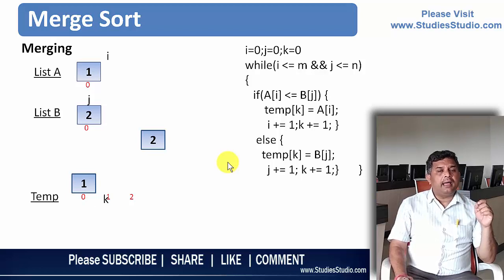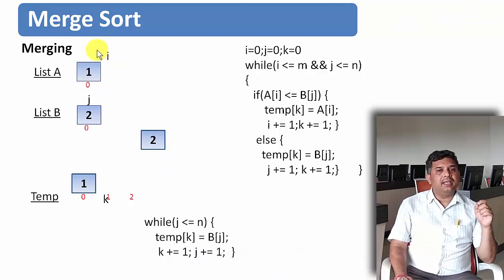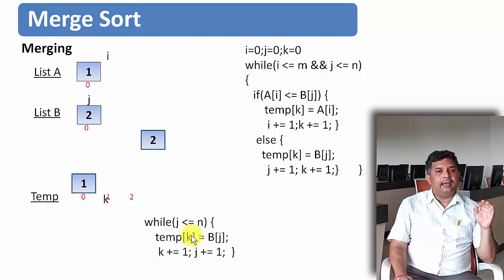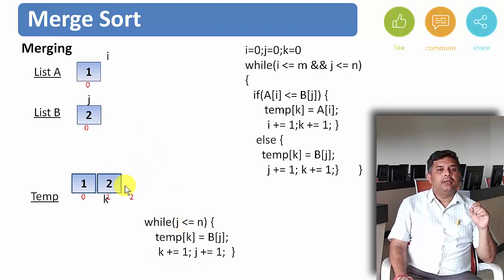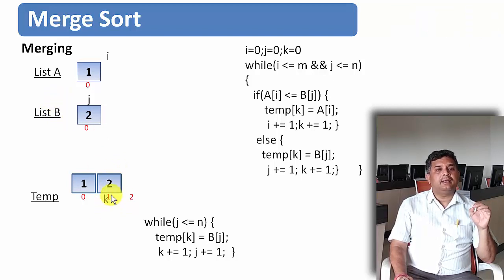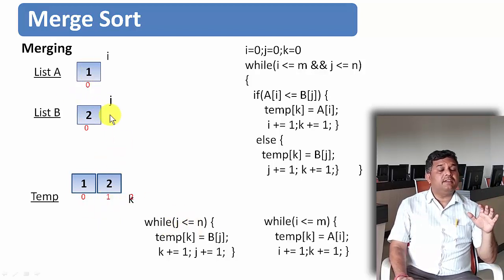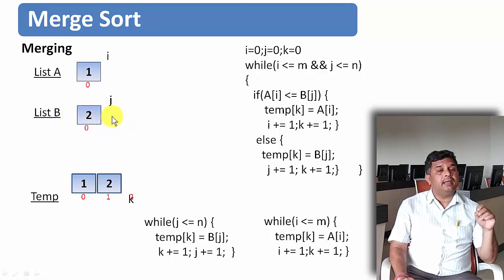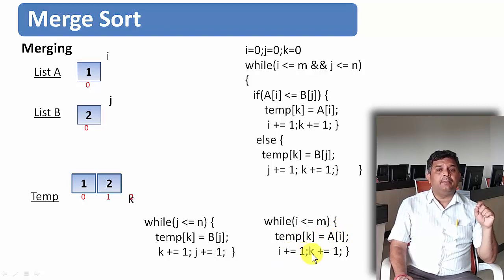When i comes out of its data set, only j is available. We apply: while j is less than or equal to n, copy whatever data is in B[j] to position k, increment k and j. Alternatively, if j is exhausted first and there are still remaining data in A, we apply: while i is less than or equal to n, copy A[i] data to position k, increment i and k. Combining these three parts of the algorithm completes the merging.